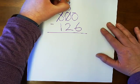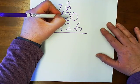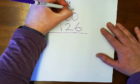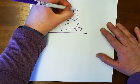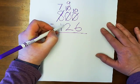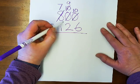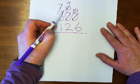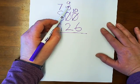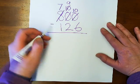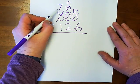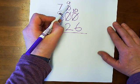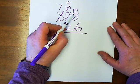I'm going to unbundle one ten to make ten ones. So now there are nine tens and ten ones. After unbundling, I see I have seven hundreds, nine tens, and ten ones.